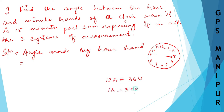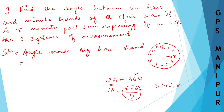For one hour it is 360 divided by 12. We have 3 hours and 15 minutes, so I need to multiply 3 hours and 15 minutes by 360 divided by 12. That is our formula for the angle made by the hour hand.